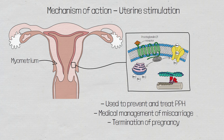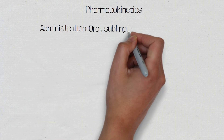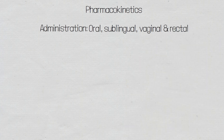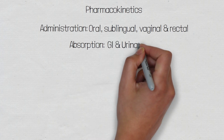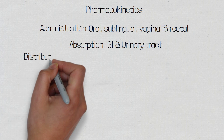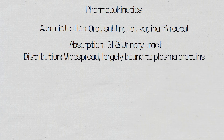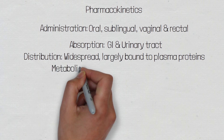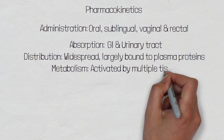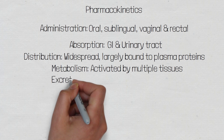Now that we have an understanding of how misoprostol works, let's look at the pharmacokinetics. Misoprostol can be administered orally as a tablet, sublingually, vaginally, and rectally, and is absorbed by the GI or urinary tract. Once absorbed, misoprostol is largely bound to plasma proteins and is subject to first-pass metabolism, which will decrease the amount of drug that reaches systemic circulation by approximately 20% — this is referred to as the bioavailability of the drug. Misoprostol is metabolised by various tissues around the body into the active form misoprostol acid, and elimination is via the kidneys in the urine.